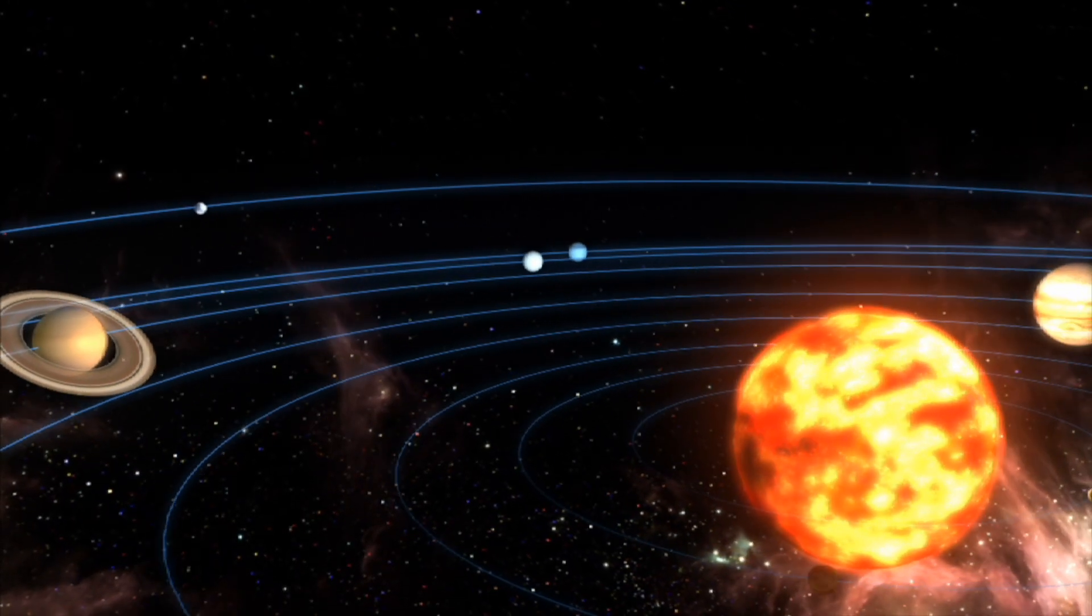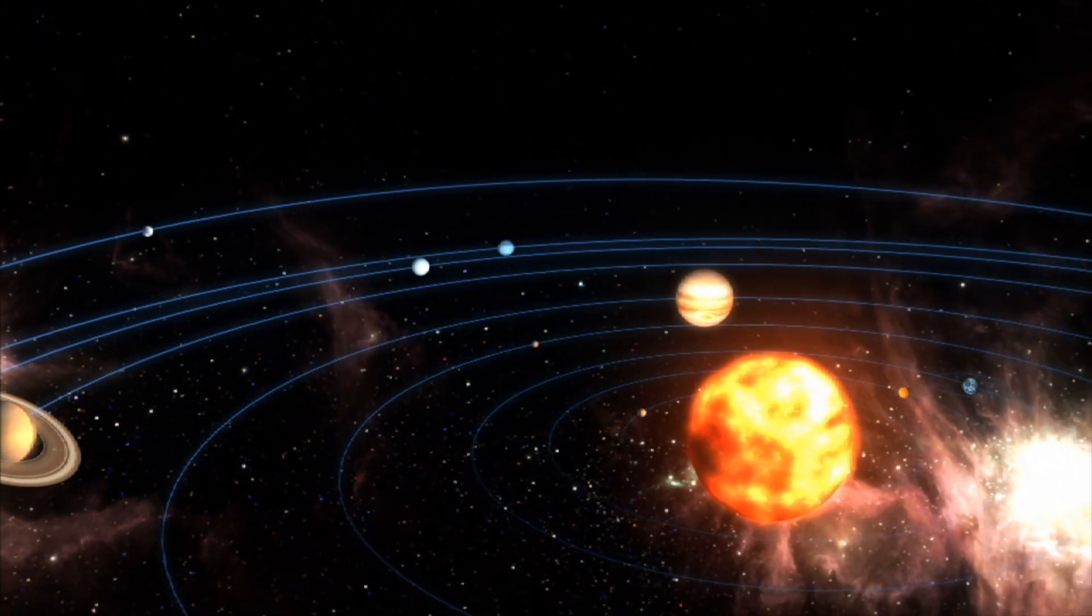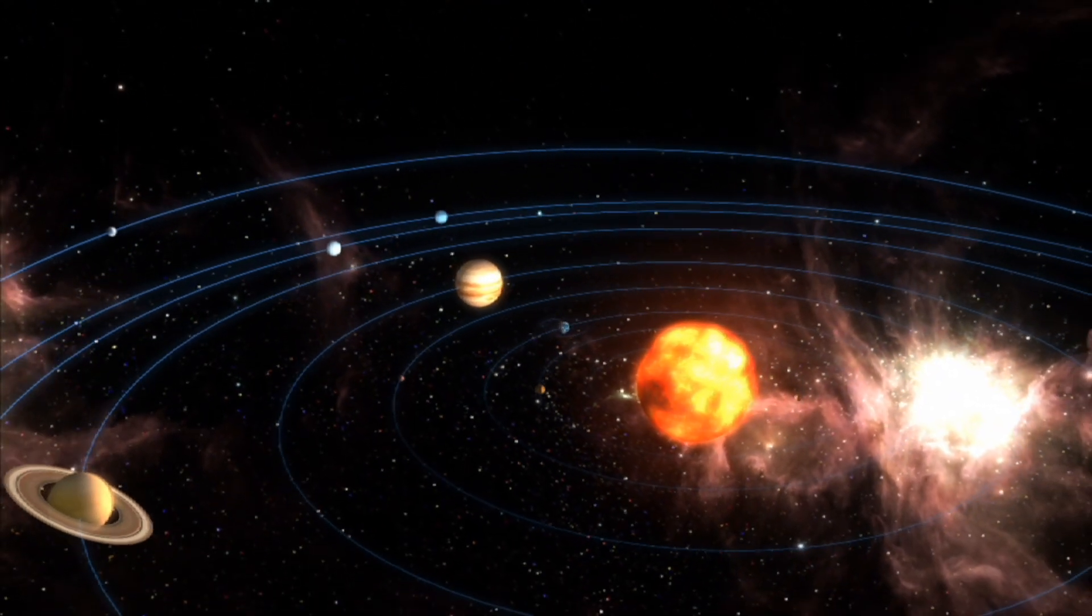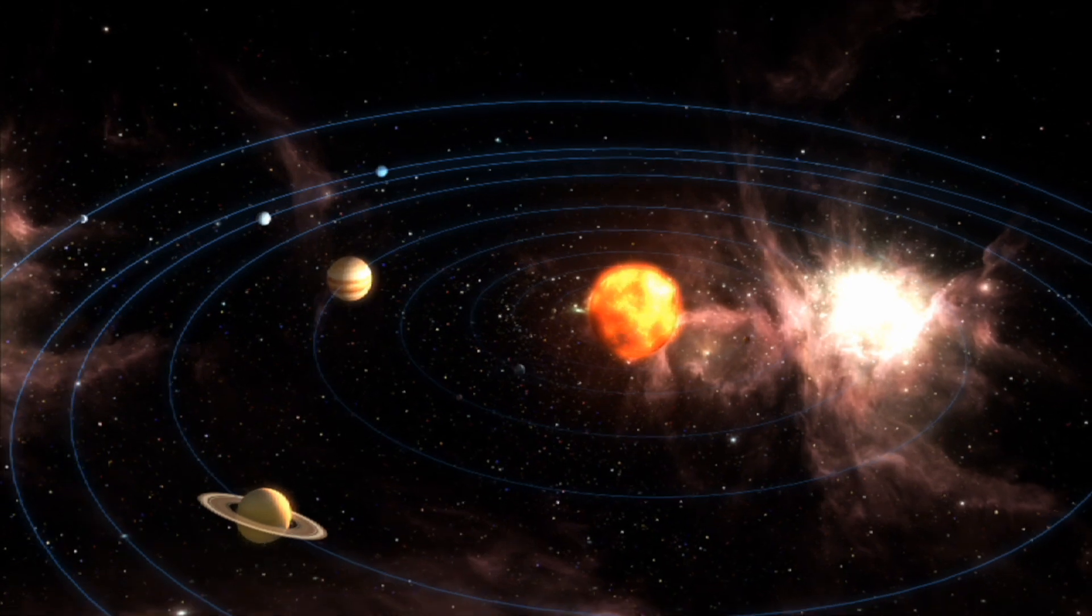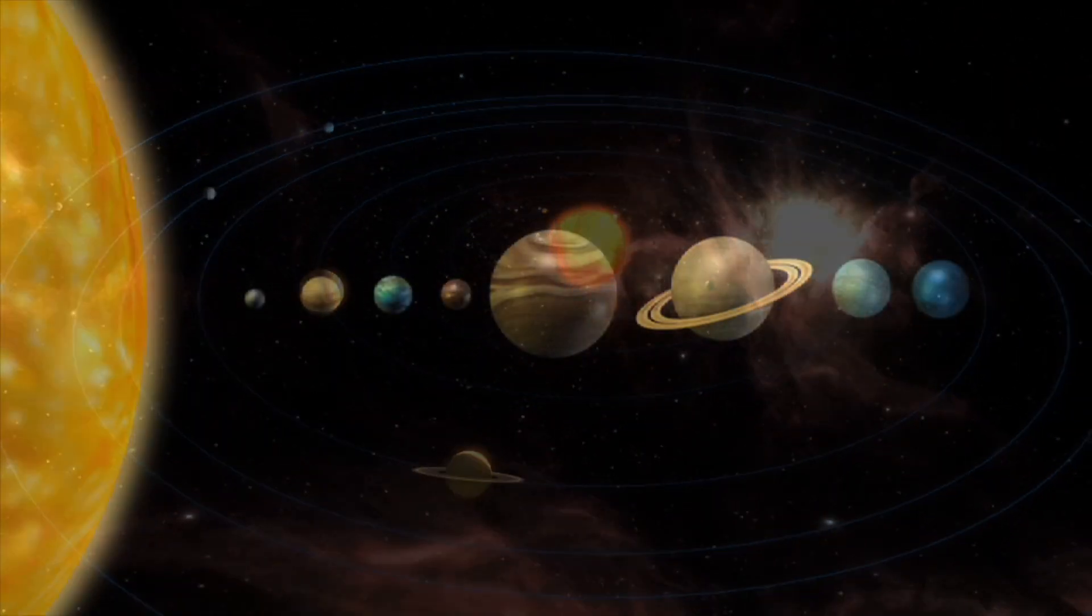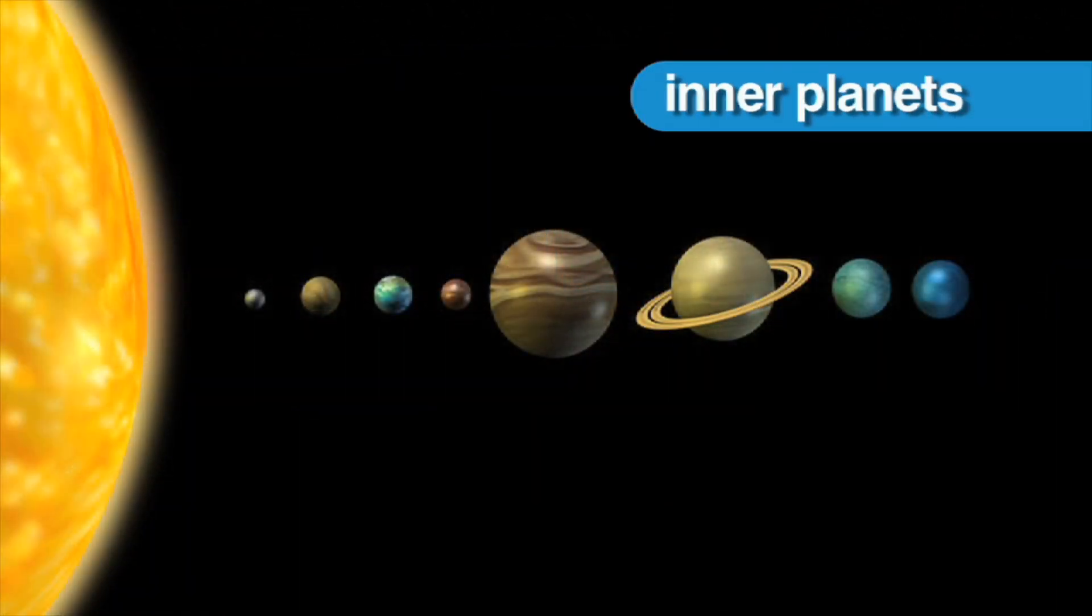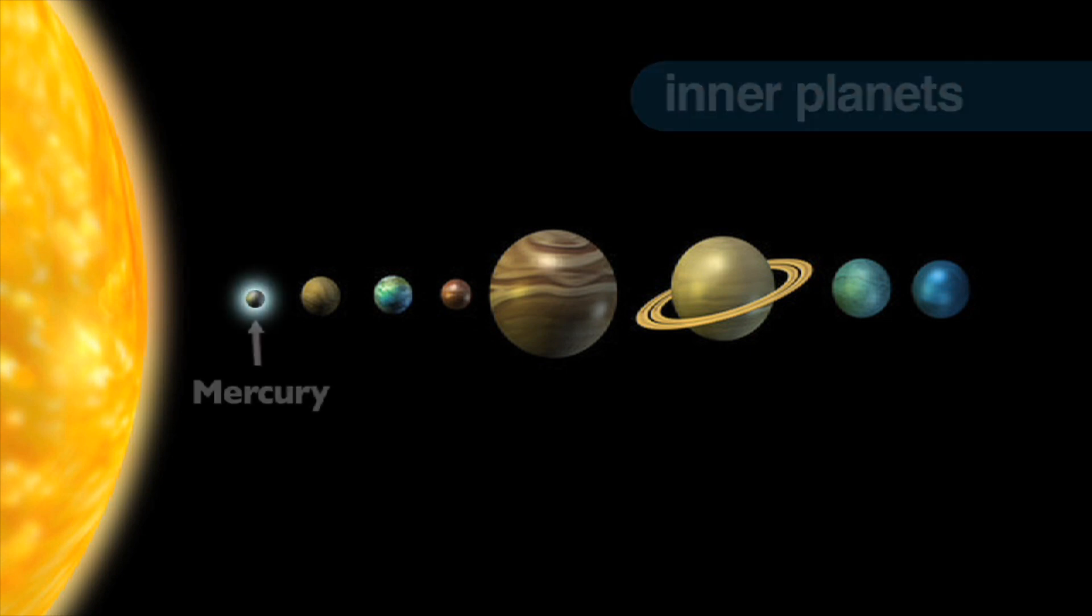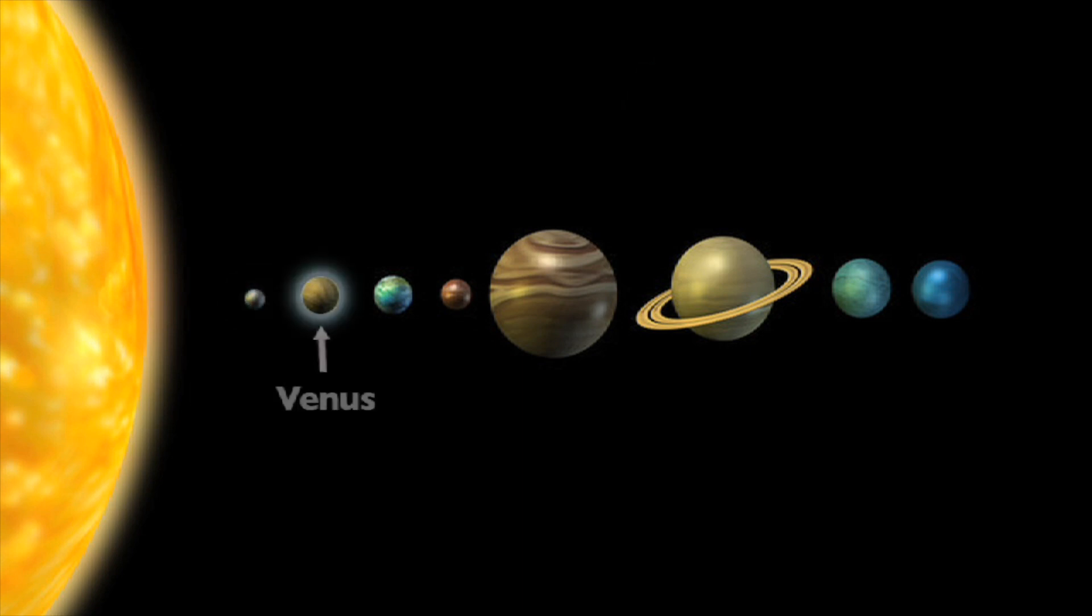There are eight planets in our solar system that revolve around the sun. The four inner planets, which are closest to the sun, are Mercury, Venus, Earth, and Mars.